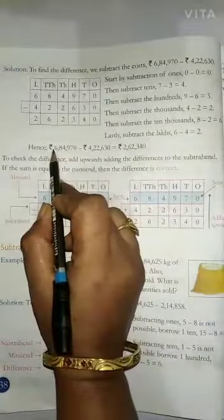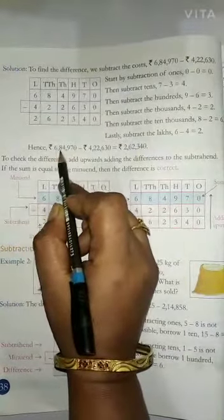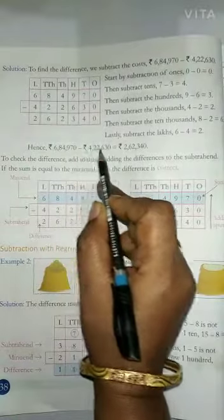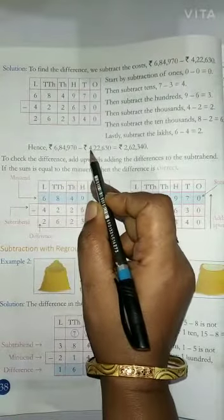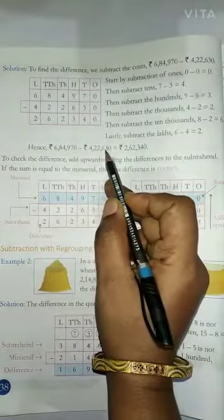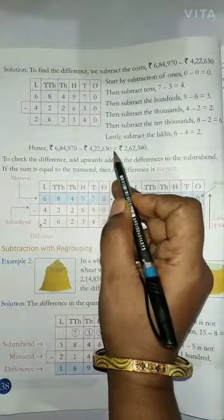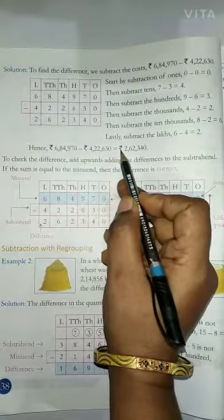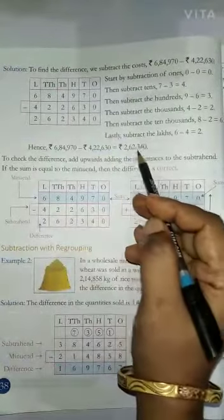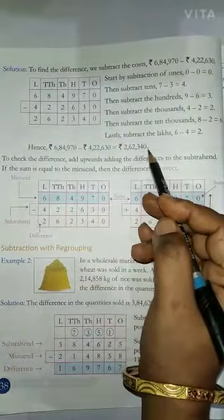Rs. 6,84,970 minus Rs. 4,22,630 gives us Rs. 2,62,340.